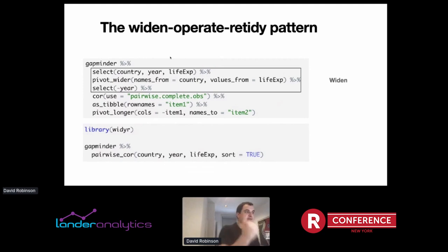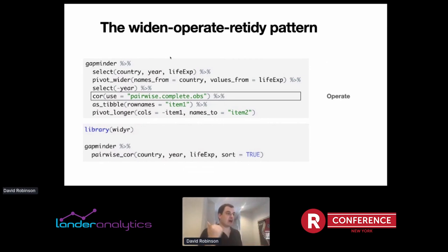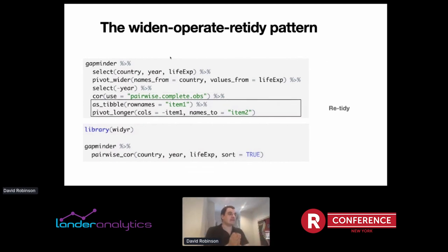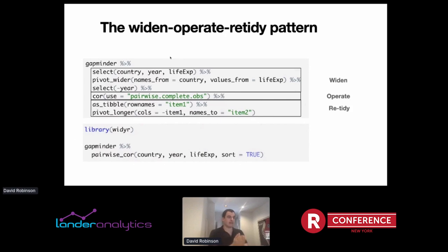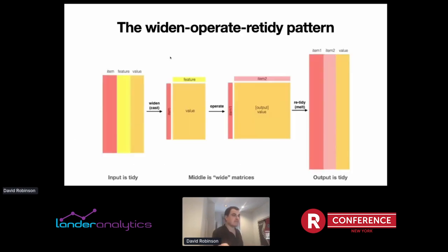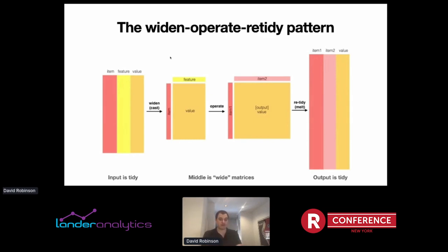There's a step where we widen the data — using TidyR's pivot_wider function to turn the tidy table into a wide dataset. Then we operate on it using a matrix operation, in this case the cor function. And finally, we retidy it, turning it back into a tidy table. Together, this widen-operate-retidy operation appears in a lot of places. It starts with a tidy table, widens into an item-by-feature matrix, performs some operation turning it into a square matrix, and then retidies it. What's great about the pairwise_cor function and its siblings is that the input is tidy and the output is tidy — all the steps in the middle where you work with matrices are contained within that one function.